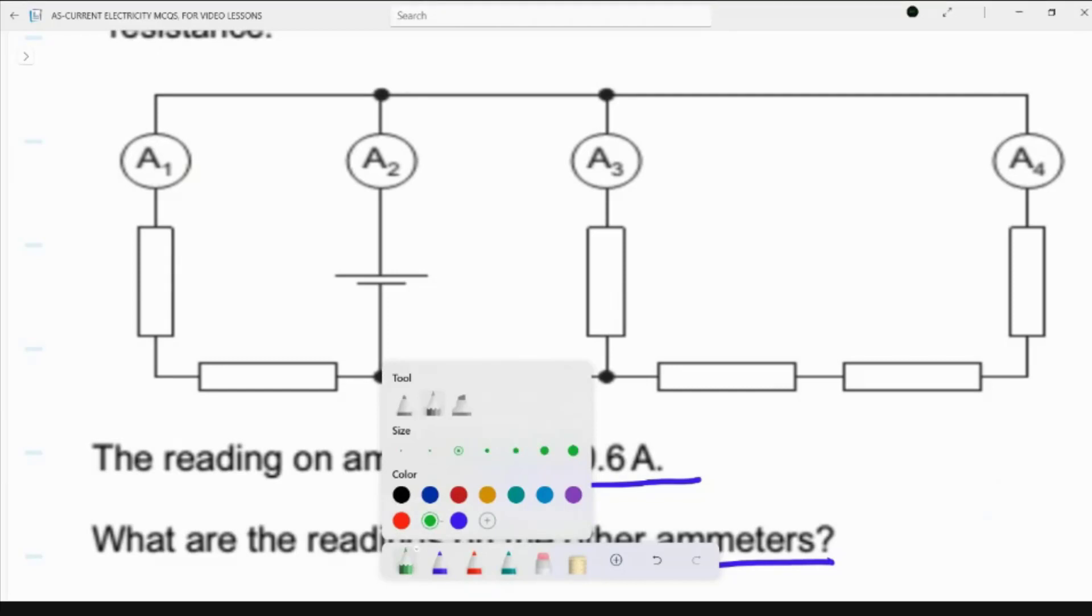Here 0.6 ampere is the current. This 0.6 ampere current means that when I have this is 0.6 ampere current, so if this is a resistor, this is a resistor, so from two resistors the current is basically 0.6.